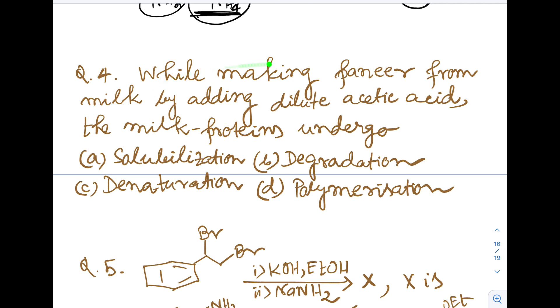Question 4. While making paneer from milk by adding dilute acetic acid, the milk proteins undergo solubilization, degradation, denaturation, or polymerization. This is from class 12 biomolecules chapter. This is a straightforward informative question from NCERT. This process is referred to as denaturation - dissociation and distortion of proteins.